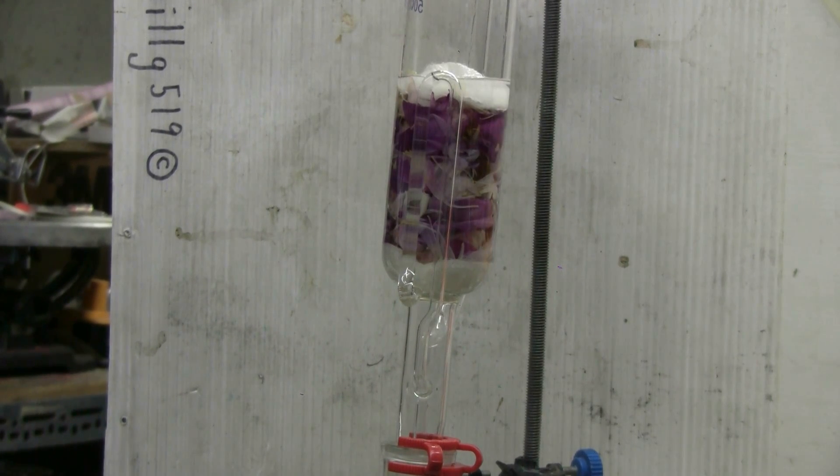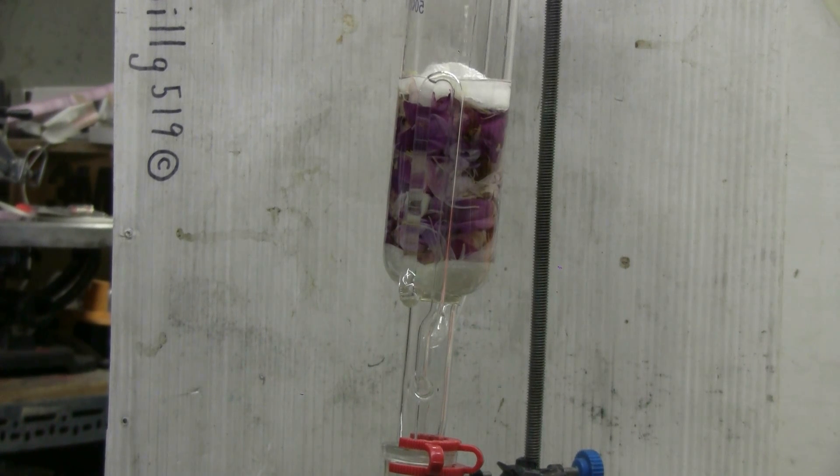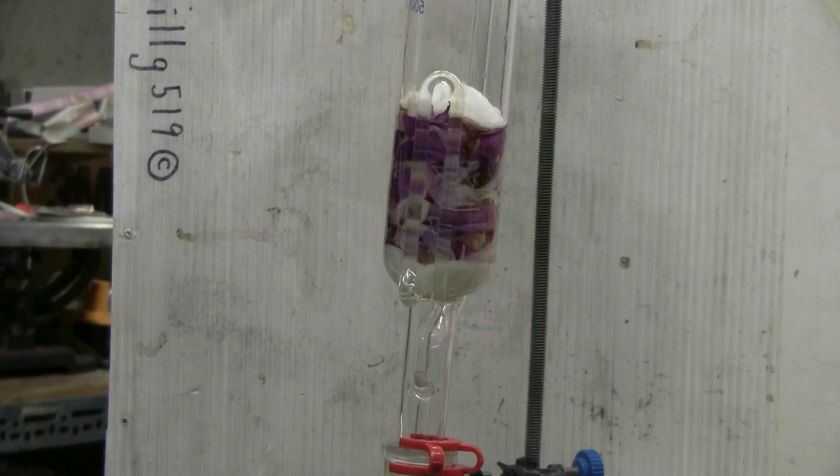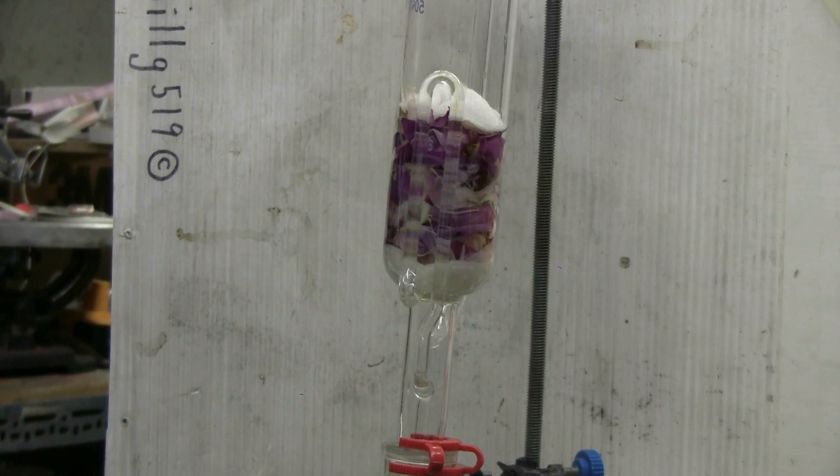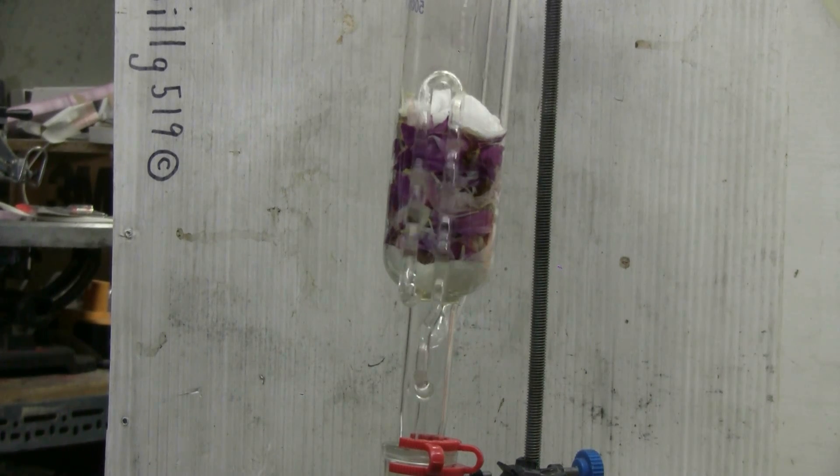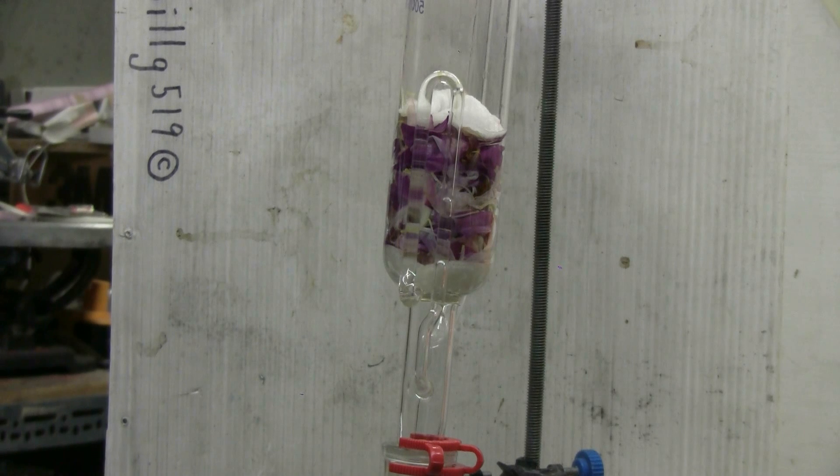Cycle number three here should turn over very shortly. It's just about ready. There goes number three. No color is being extracted from the flower petals by the ether.